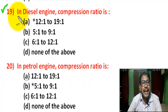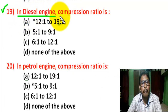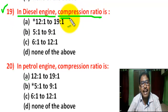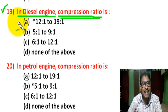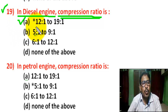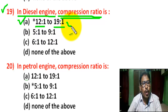Question number 19: In a diesel engine, compression ratio — there are four options. Correct answer is A — 12:1 to 19:1. The compression ratio in a diesel engine is within the range of 12:1 to 19:1.